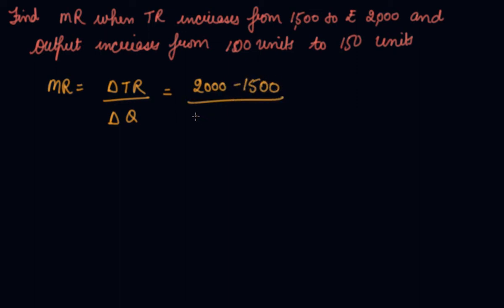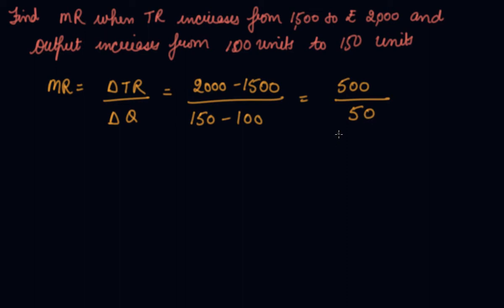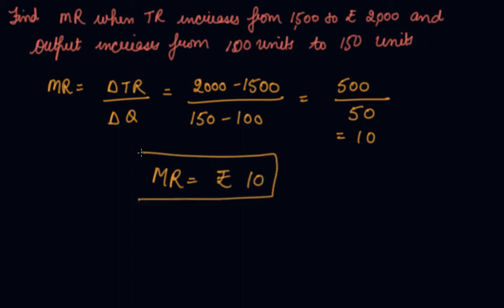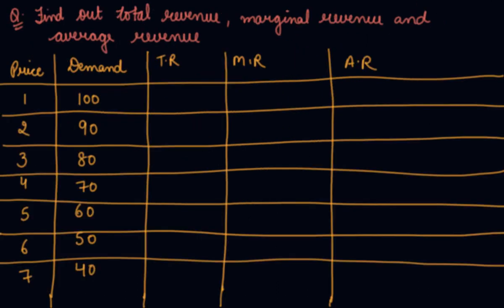Change in TR is 2,000 minus 1,500 equals 500. Change in output is 150 minus 100 equals 50. So MR = 500 divided by 50 = 10. MR is equal to rupees 10, which is the answer to this question.